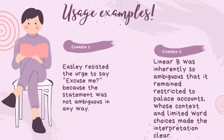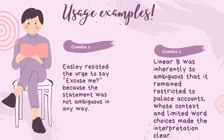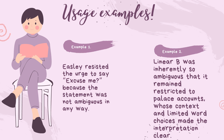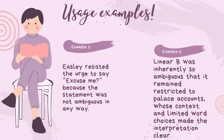Usage examples. Example one: easily resisted the urge to say 'excuse me,' because the statement was not ambiguous in any way. Example two: Linear B was inherently so ambiguous that it remained restricted to palace accounts, whose context and limited word choices made the interpretation clear.